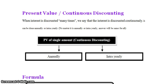Hello everyone. In this class we will discuss about present value or continuous discounting. When interest is discounted, many times we say that the interest is discounted continuously. It can be done annually or intra-yearly. No matter it is annually or intra-yearly, the answer will be the same for all. Present value of a single amount with continuous discounting is divided into two types: annually and intra-yearly.